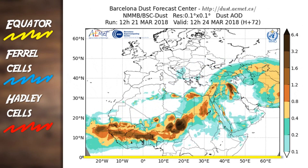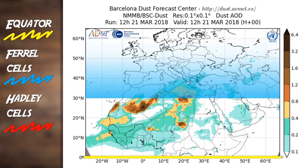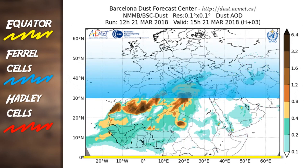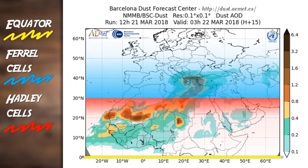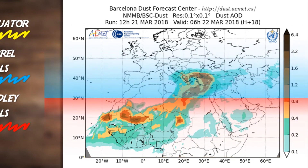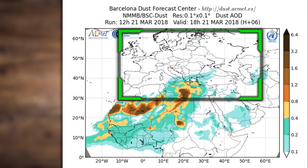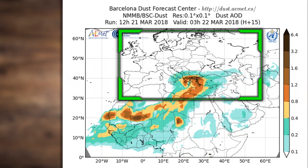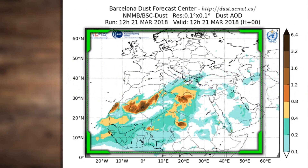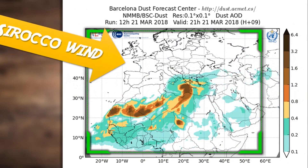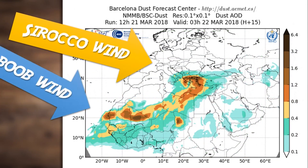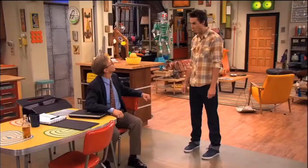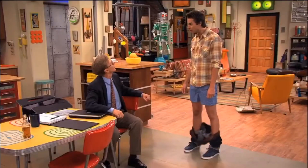This is the equator line, these are the Ferrel cells, and these are the Hadley cells. You may also be asking why the Sirocco winds only mention Europe, when it clearly affects Africa also. That is because this is a Sirocco wind, and this is a Haboob wind — same phenomenon, only a different name.